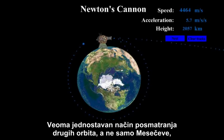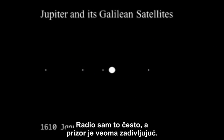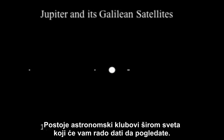A very easy way to observe orbits, other than our own Moon, is to look at the moons of Jupiter through a telescope. I've done this many times and it's a very amazing sight. If you don't have a telescope, find someone who does. There are astronomy clubs all over the world that will gladly let you have a look.